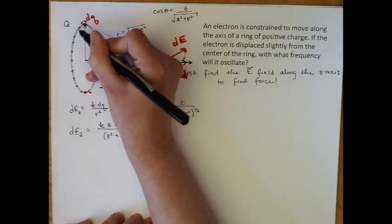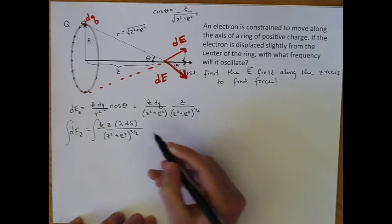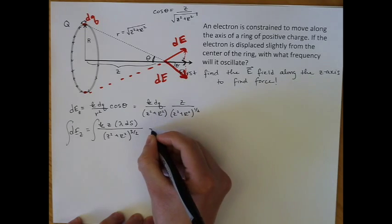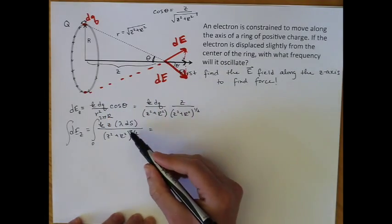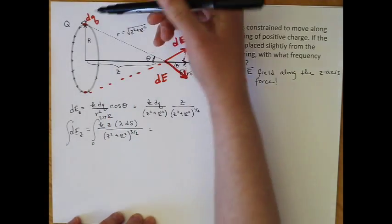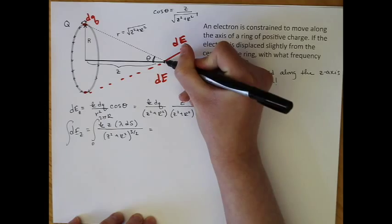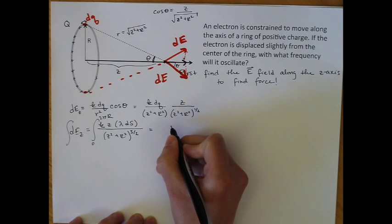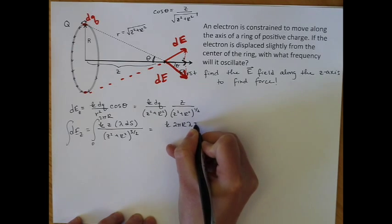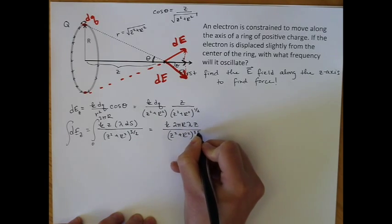dq is lambda times ds, where s is a little length along the ring. And that's going to be divided by (z squared plus R squared) to the three-halves. Now, s doesn't depend on z. So when we integrate this, and we integrate s, that's just going to give us from 0 to 2πR. This will just give us k times 2πR lambda z over (z squared plus R squared) to the three-halves.